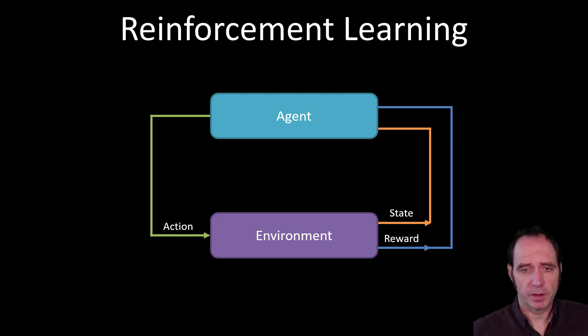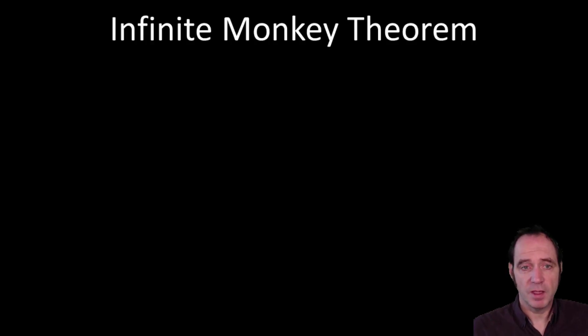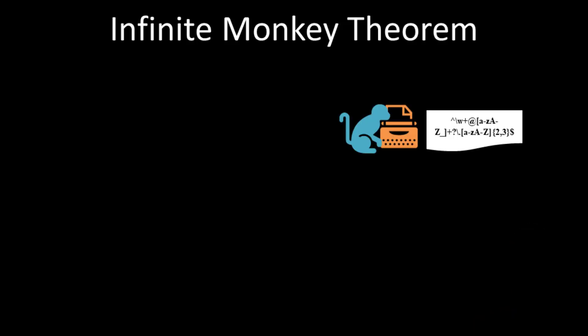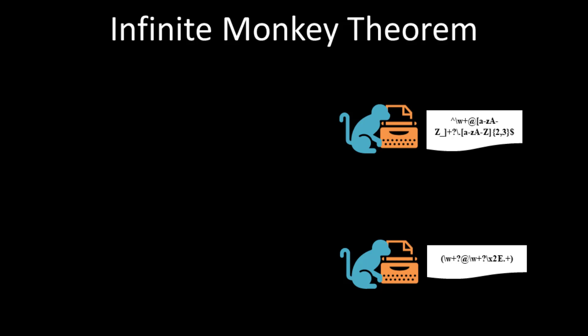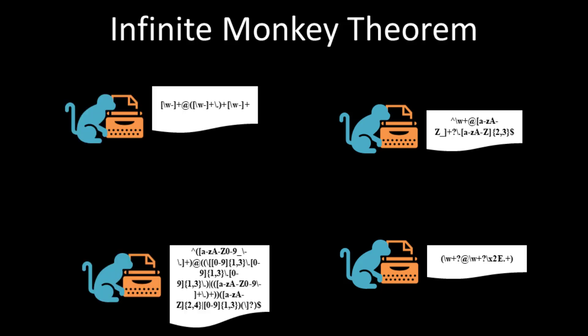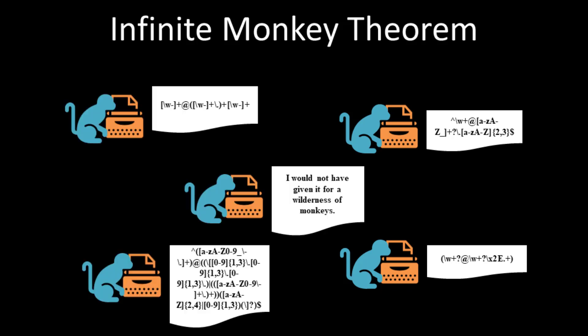When working with reinforcement learning, we often talk about agents evolving in their environment. One way of thinking about this is the infinite monkey theorem — if you have an infinite amount of monkeys in front of an infinite amount of typewriters, one of them will write the complete works of Shakespeare. However, when working with reinforcement learning, we don't have infinite processing power, so we use algorithms to help agents evolve within their environment.